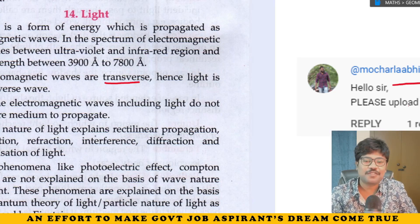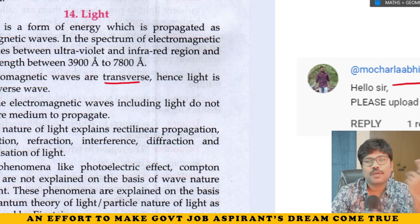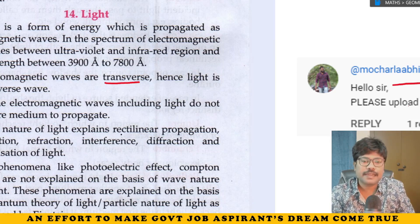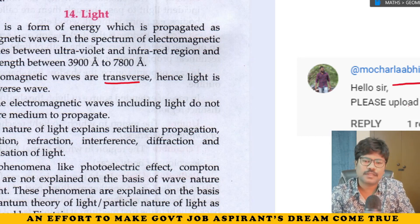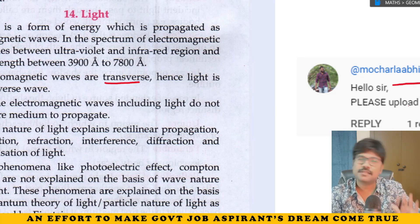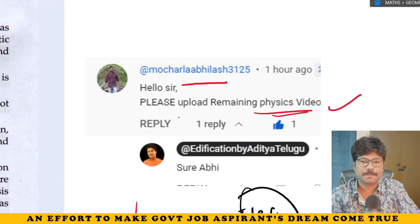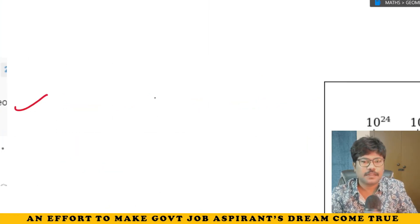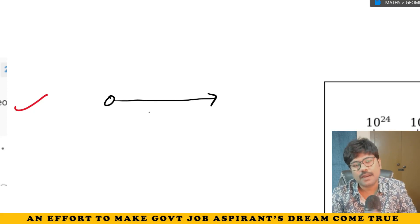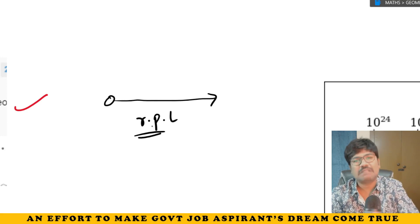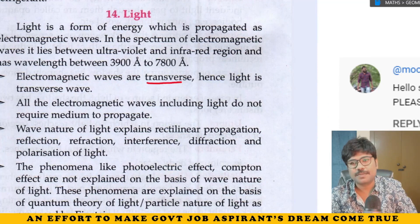Light has two natures — wave nature and particle nature. Wave nature of light explains: rectilinear propagation, reflection, refraction, interference, diffraction, and polarization. Rectilinear propagation means light travels in a straight line — when a light source emits light, it travels through a straight line. That concept is called rectilinear propagation of light.